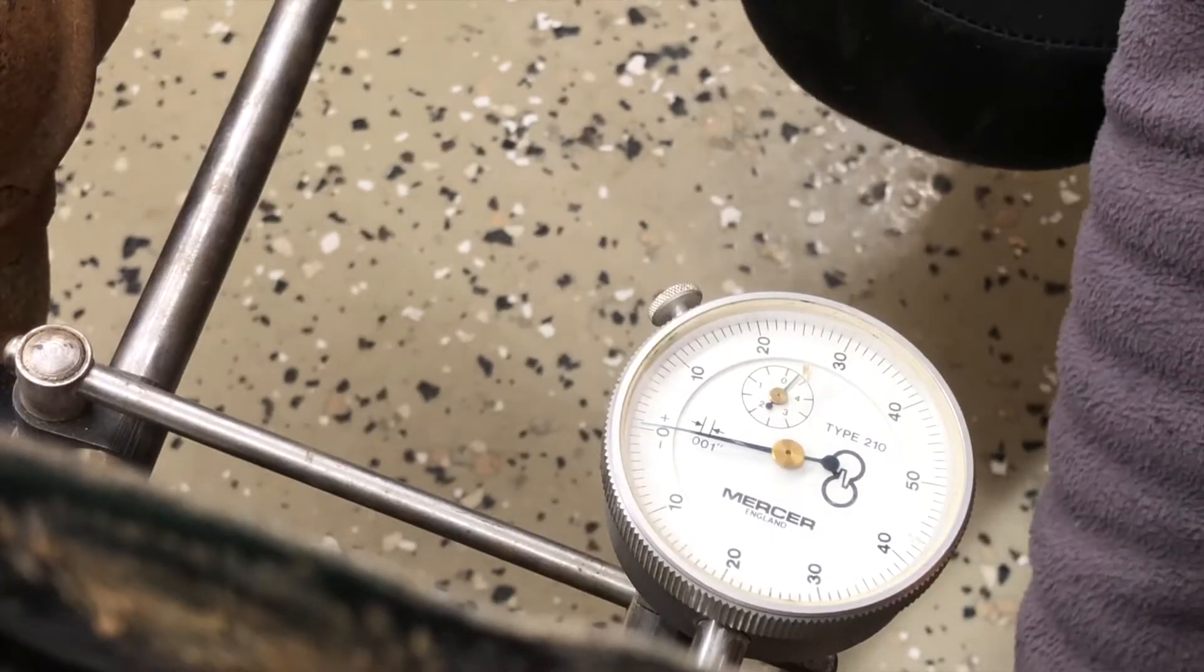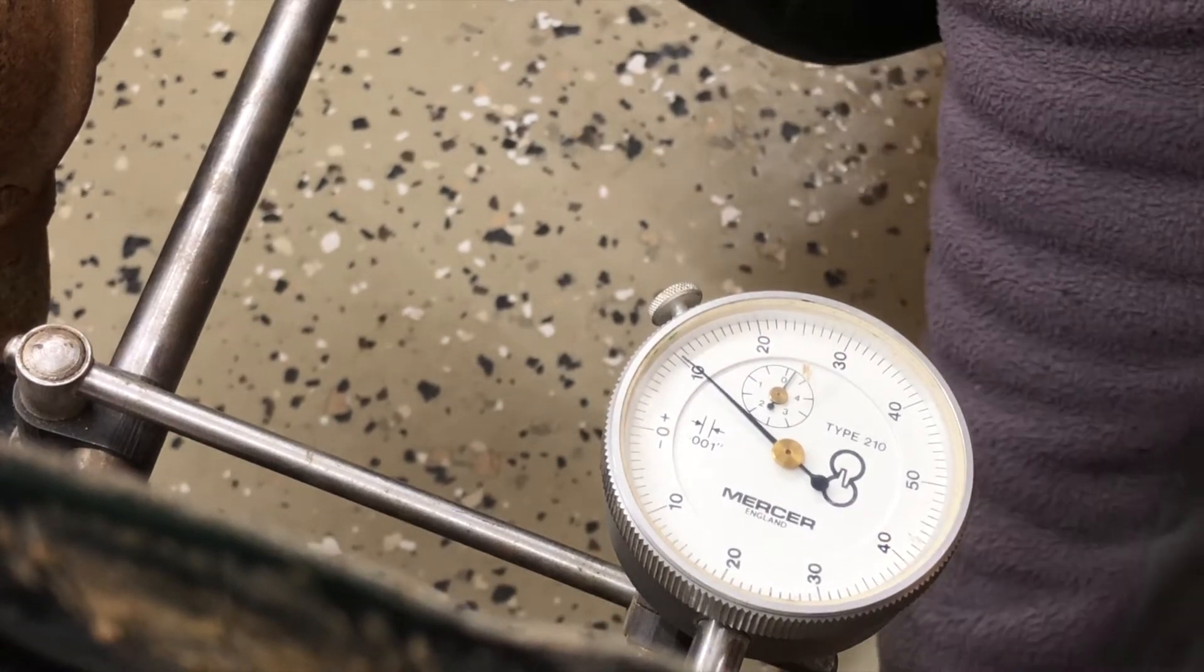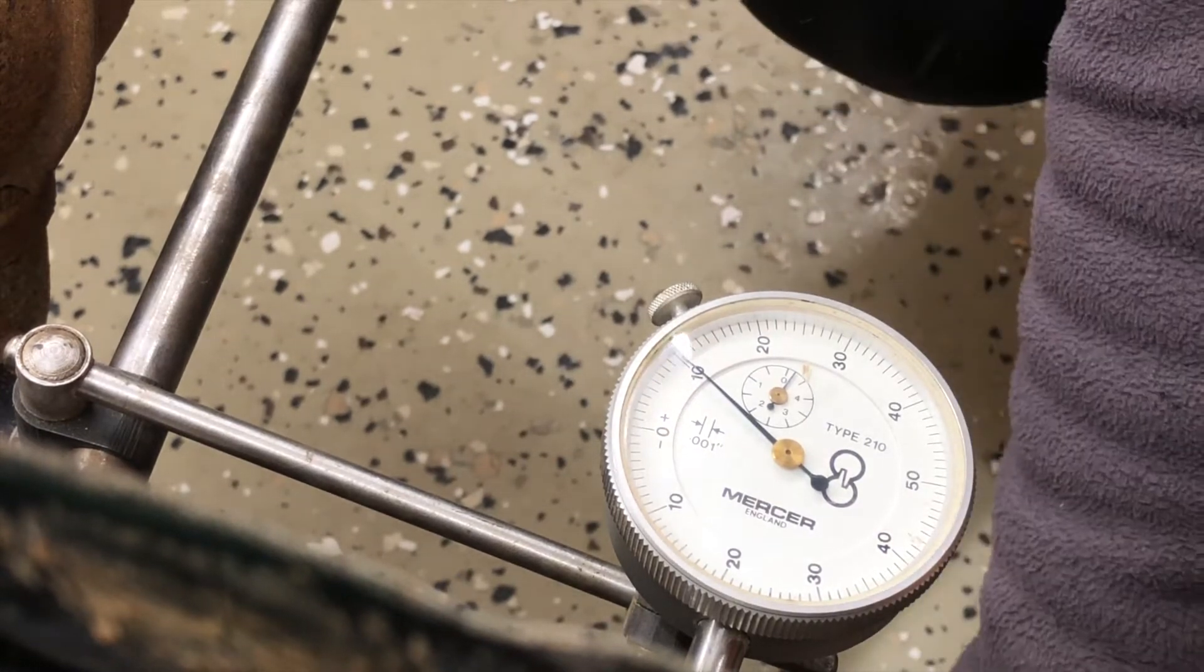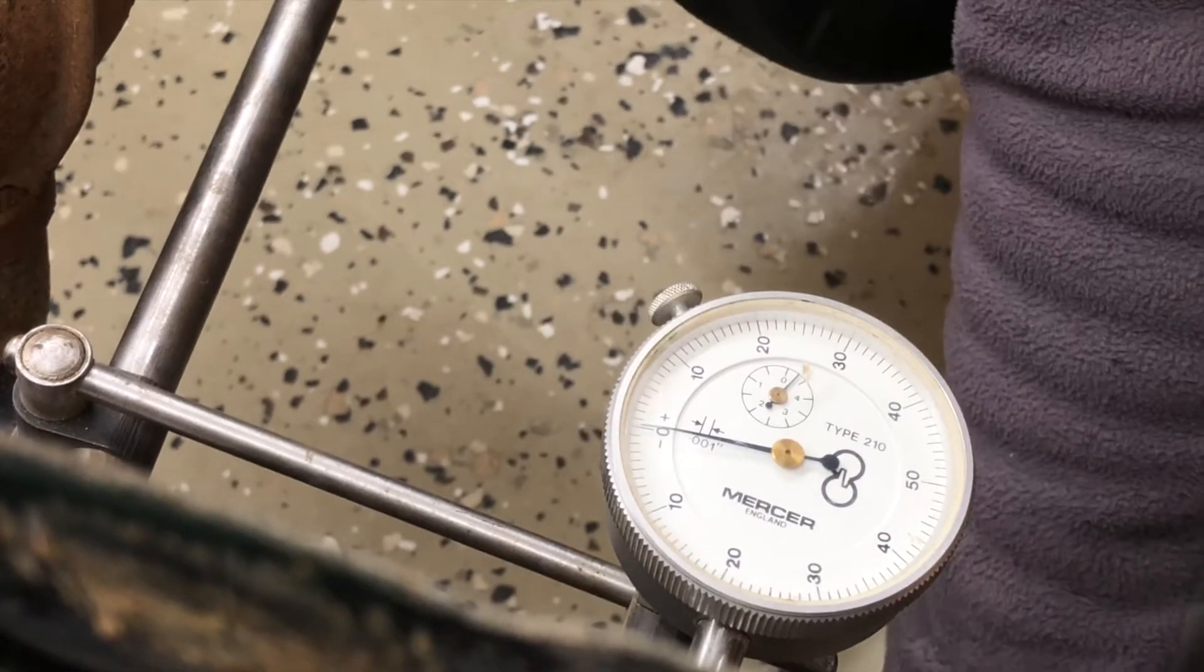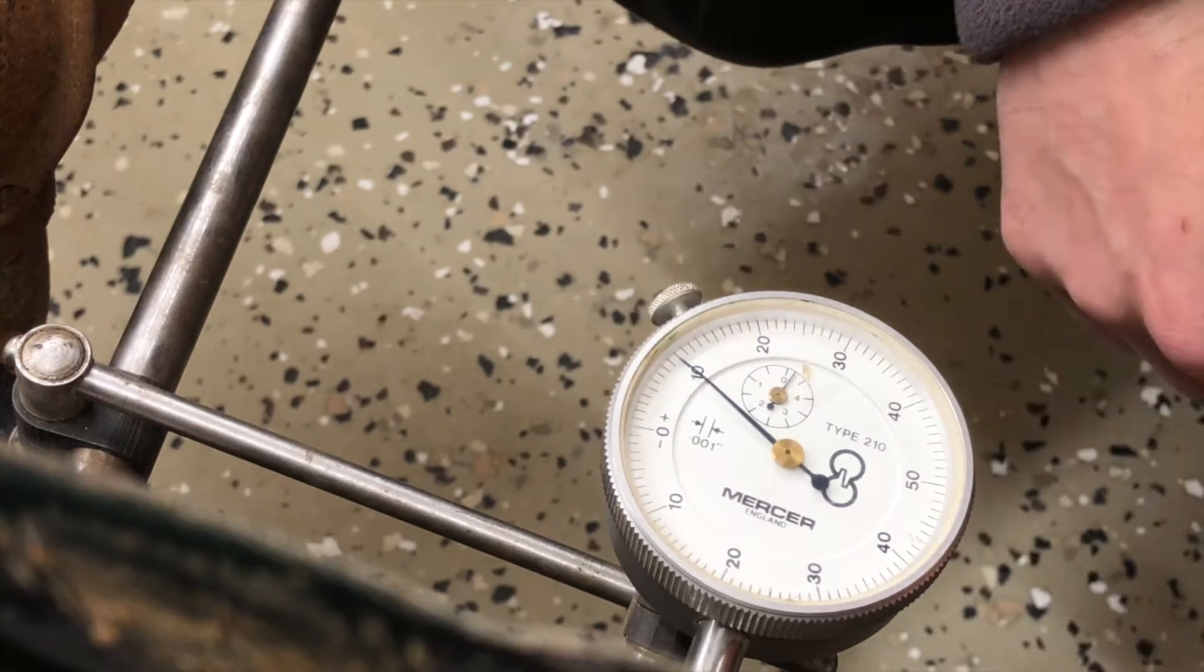All right, so we'll make sure the crank's pushed in and it is, and then just with my hands I'll pull it out and I get to 10, so that's 10 thousandths. Put it back in, I'll do it three times so we can agree that's ten thousandths.